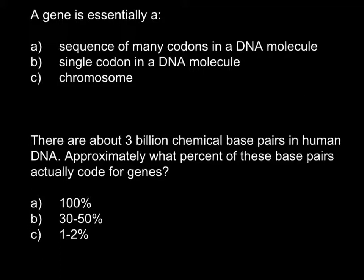First question: a gene is essentially A. I can cross out right away answer C, because a chromosome consists of genes, and not genes consist of chromosomes. I also want to cross out answer B, because a single codon in a DNA molecule is not a gene. A codon is only a small part of the gene.